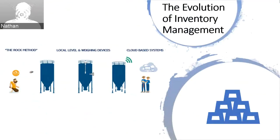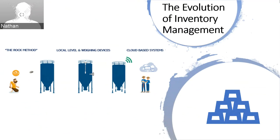I wanted to transition to the methods we currently see when customers are receiving and gathering their inventory data. On the left, we start with the rock throwers — the sweet sound of rock hitting the silo. A simple but time-consuming method, especially if checked frequently, and your accuracy is only as good as your arm. This method would be similar to walking around the stadium on game day: there is no ticket into the game, but at least you get to enjoy the atmosphere.